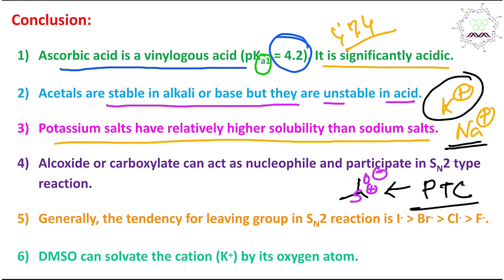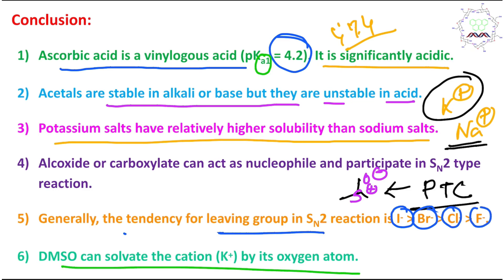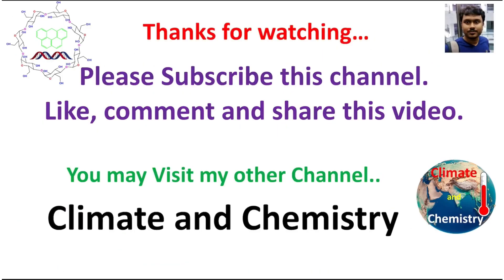Generally, the leaving group tendency for SN2 reactions is: iodide is a better leaving group than bromide, then chloride, then fluoride. DMSO solvates K⁺ via its oxygen atom. I believe this video may be useful.